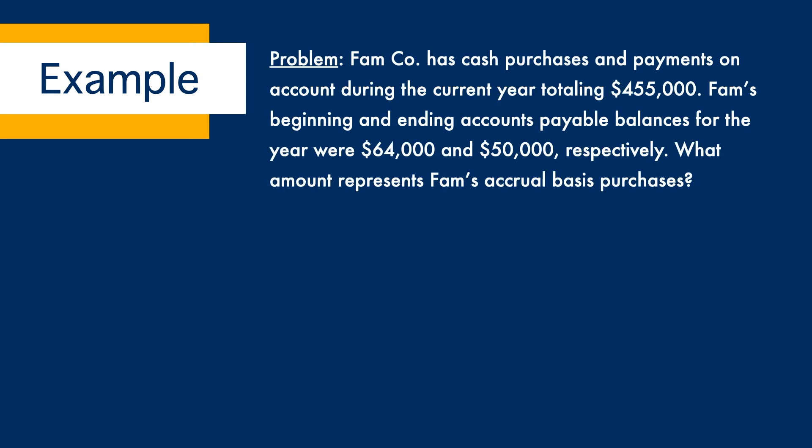You ready for a challenge? Let's move on to one of my favorite examples and see if you can figure this one out with me. Fame Company has cash purchases and payments on account during the current year totaling $455,000. Fame's beginning and ending accounts payable balances for the year were $64,000 and $50,000 respectively. What amount represents Fame's accrual basis purchases?